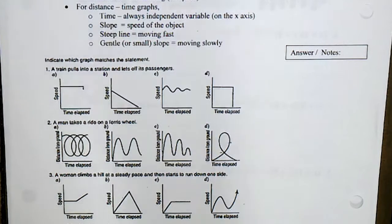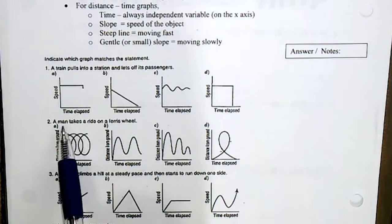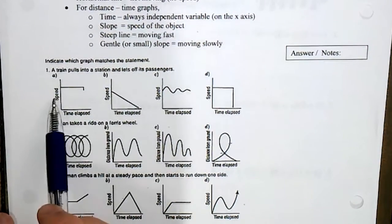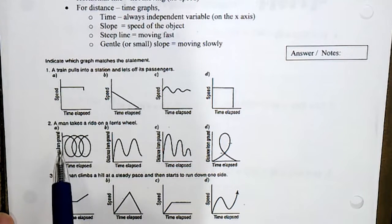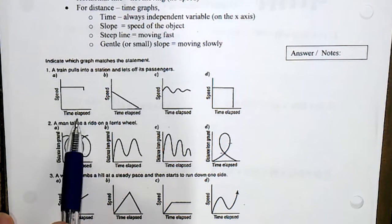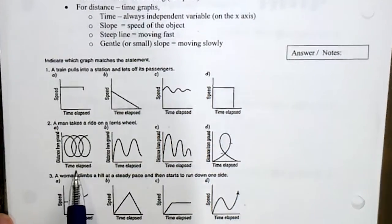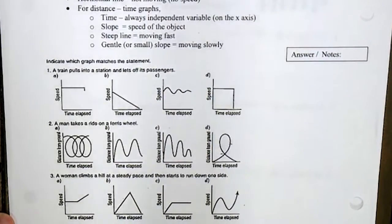So the next ones I want you to go through - pause the video, make sure you try and figure out which one represents each situation. Key thing every time: look at what's on the axis. This one you've got speed versus time elapsed, this one is distance from ground versus time elapsed. So look at it before deciding which one represents the situation. Once you've got all the answers down and you've tried that out every single one, then start the video and see what happens.